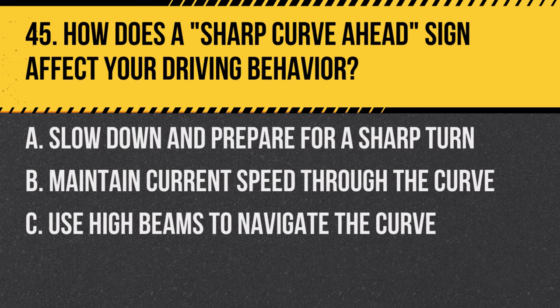Question 45. How does a sharp curve-ahead sign affect your driving behavior? A. Slow down and prepare for a sharp turn. B. Maintain current speed through the curve. C. Use high beams to navigate the curve. Answer: A. Slow down and prepare for a sharp turn. This sign warns of a sharp curve, requiring drivers to reduce speed and proceed with caution.